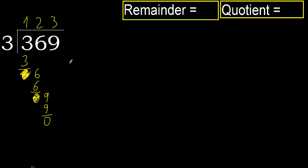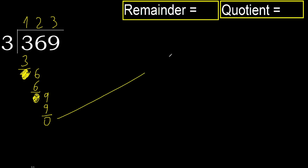Subtract: 0. There is no next digit, therefore we finish. So 369 divided by 3 is 123.